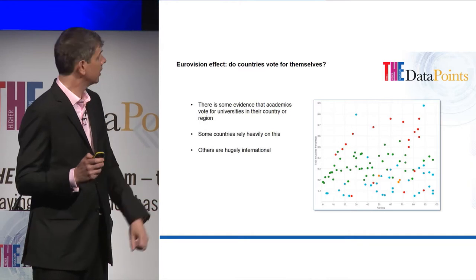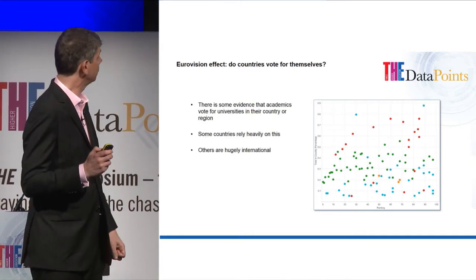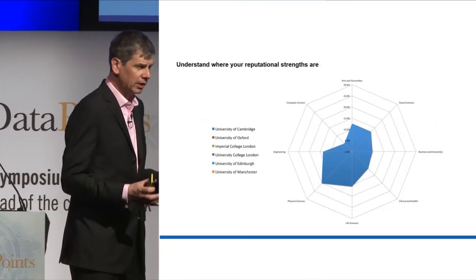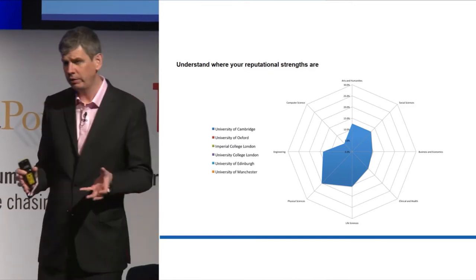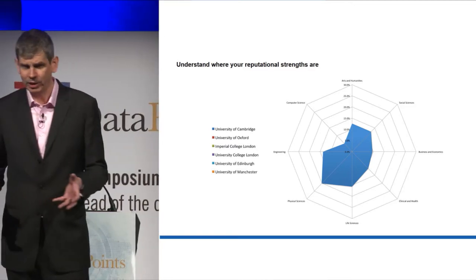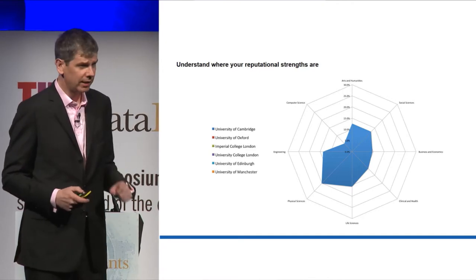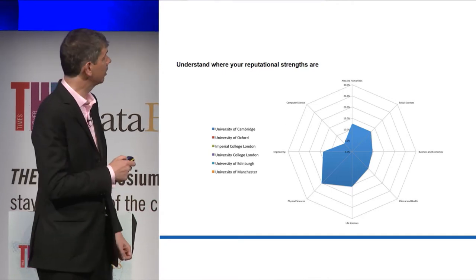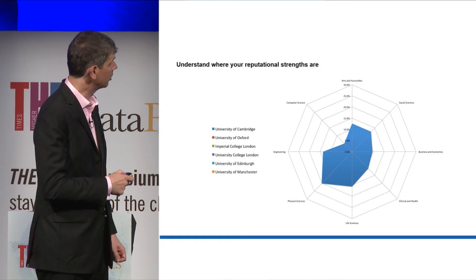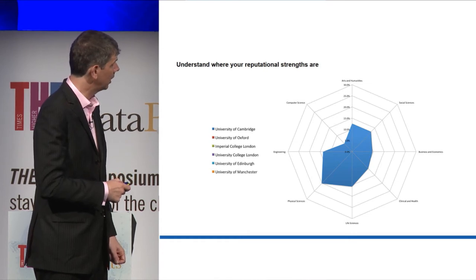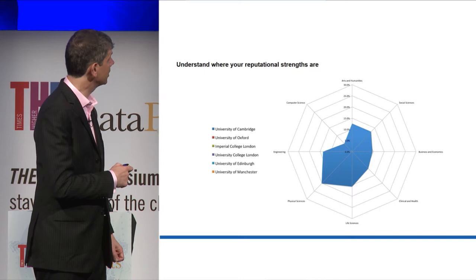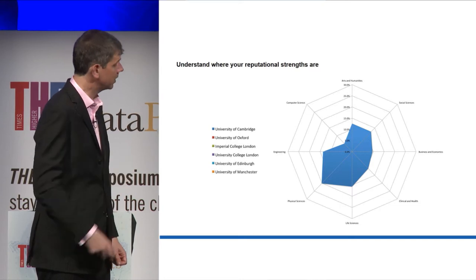Remember I said we can look at reputation not just by country of origin, but also by area of recognition across eight broad subject areas: arts and humanities, social sciences, business and economics, clinical and health, life sciences, physical sciences, engineering and computer science. This is Cambridge — of all its votes, Cambridge gets most recognition for the physical sciences and the life sciences.